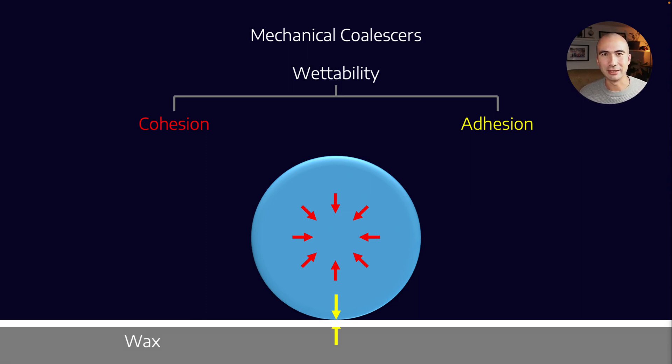So in this instance, what we would say is that the cohesive forces of water, which remember are hydrogen bonds, are much stronger than the adhesive forces between water and wax molecules. As a result, water wants to stick to itself much more than it wants to stick to the wax.